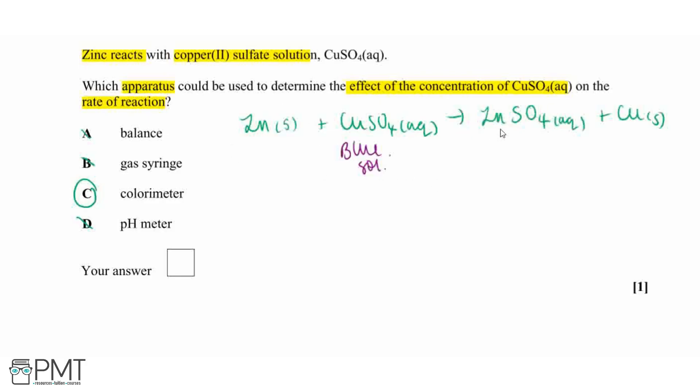Whereas our zinc is not a transition metal. Therefore, the zinc sulfate solution is actually just going to be colorless. So what we will see as this reaction proceeds is the blue color fading out. Therefore, the colorimeter will be the most appropriate piece of apparatus to determine our effect of concentration.